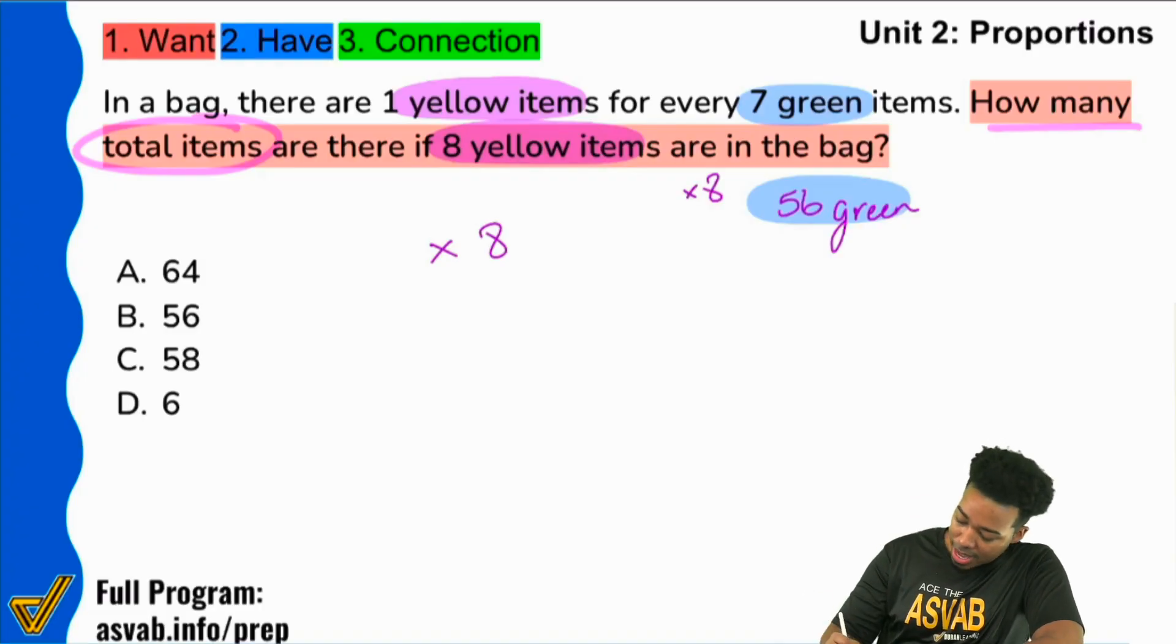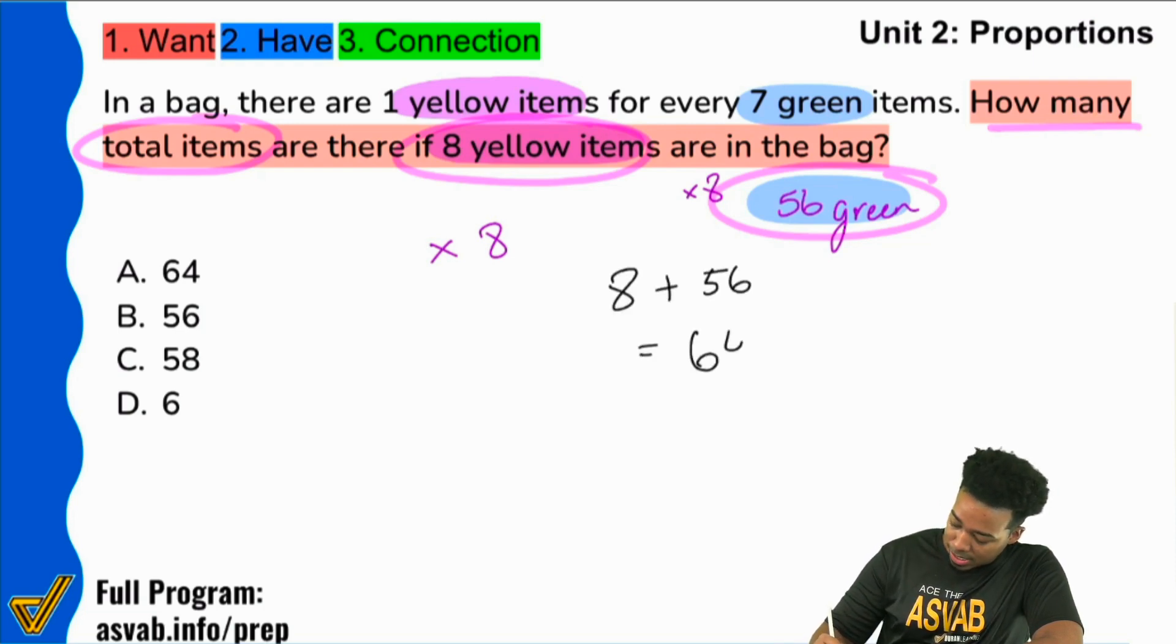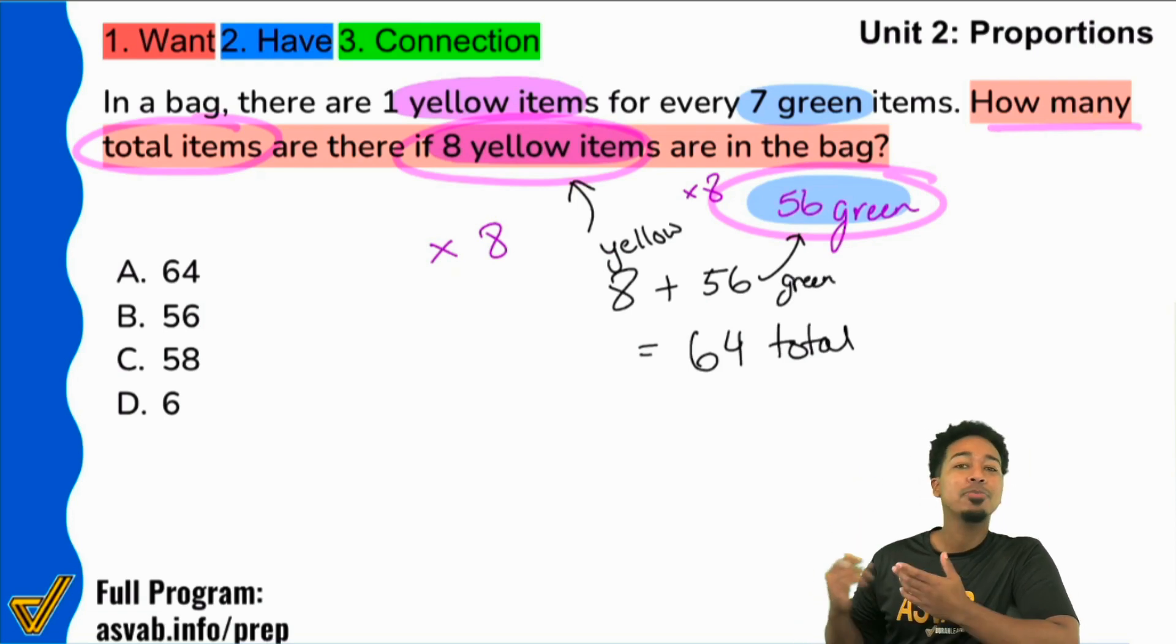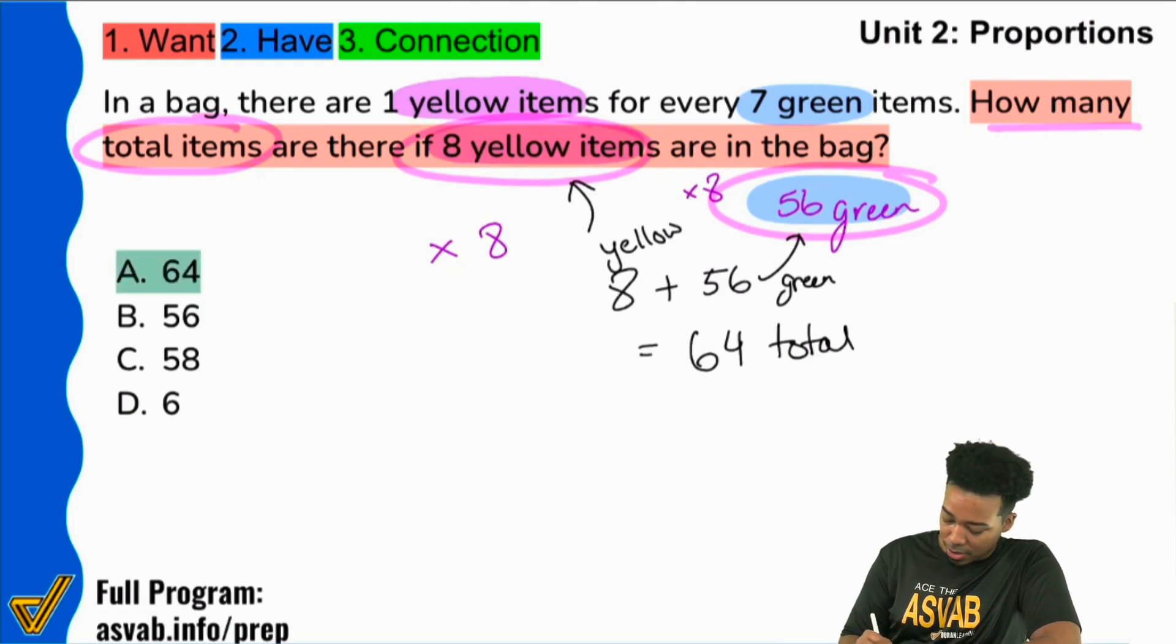So if we have eight yellow items and 56 green, we add those up and we will get 64 total. Because this will be eight yellow from right here. That'll be 56 green that we found with that accidental calculation. And we have a total of 64. So boom, that would be the answer there, A.